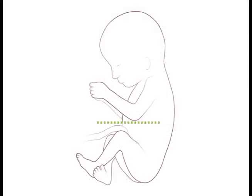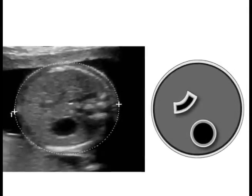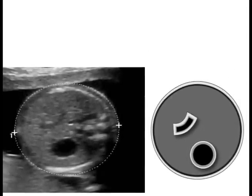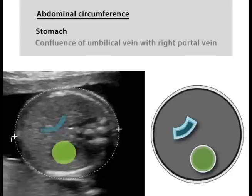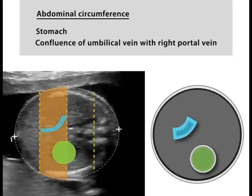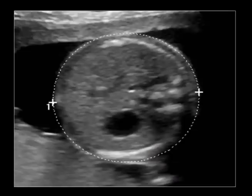The abdominal circumference is measured in a transverse plane in the mid-abdomen. Here, both sonographic and schematic images are seen. Sonographically, the abdominal circumference is measured at the level of the stomach and the confluence of the umbilical vein with the right portal vein, which appears as a J-shaped structure. If the fetal abdomen is divided into four equal sections, the umbilical vein should appear in the second portion only. Ideally, one rib is visible on each side to indicate that the image was not taken at an oblique angle. The abdominal circumference is measured by placing an ellipse around the outer border of the skin.